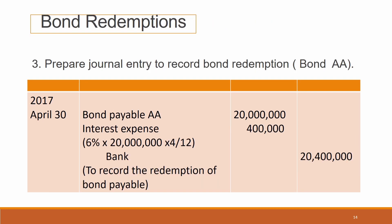Now we prepare the journal entry for bond redemption. For Bond AA, the date of maturity is 30 April 2017. Journal entry: debit bond payable RM20 million; debit interest expense — calculated as 6% × RM20 million × 4/12 (January to April) = RM400,000; credit bank RM20,400,000. Narration: to record the redemption of bond payable.